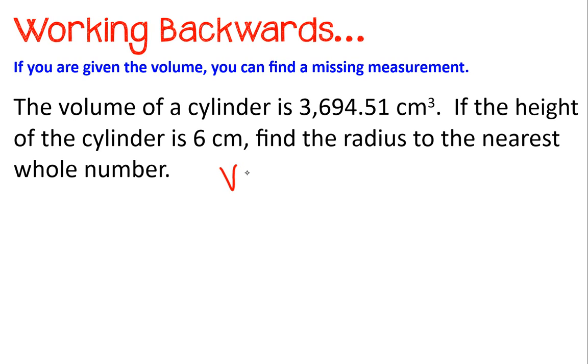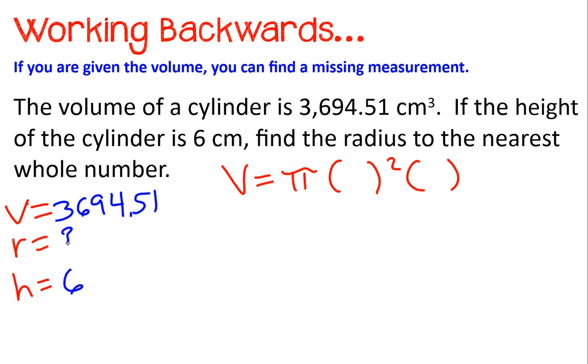So again, our formula is V equals pi times radius squared times height. Now I can use these little multiplication dots. I can also use parentheses like this to show my given values. So I'm going to take some notes over here so I know what I can fill in and where it goes. So I know my volume, 3694.51. I know my height, 6, but I don't know my radius.